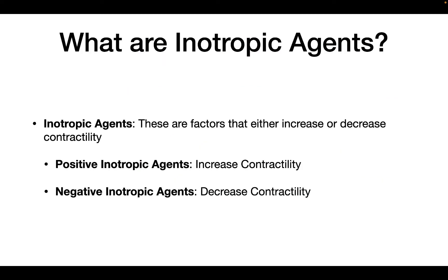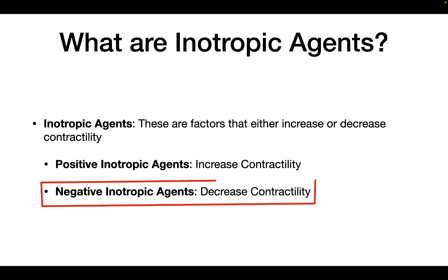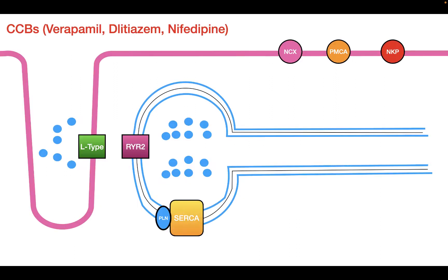So what are inotropic agents? Inotropic agents are factors that can either increase or decrease the contractility of the heart. In today's video, we're going to be looking at negative inotropic agents — agents that decrease the heart's contractility. The main mechanism by which they do this is to decrease the amount of calcium inside the cytosol.